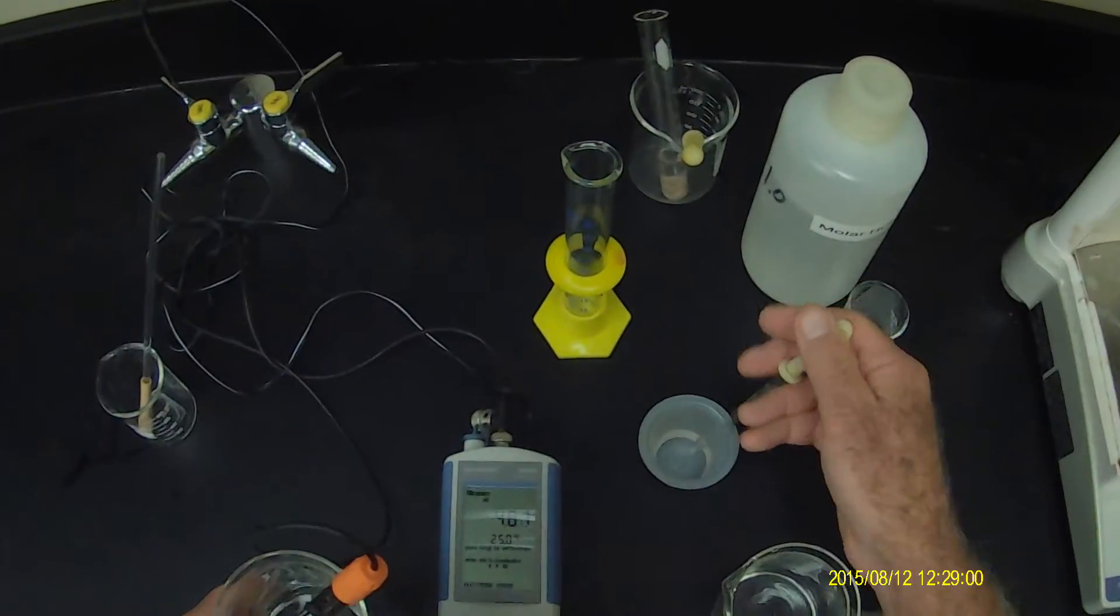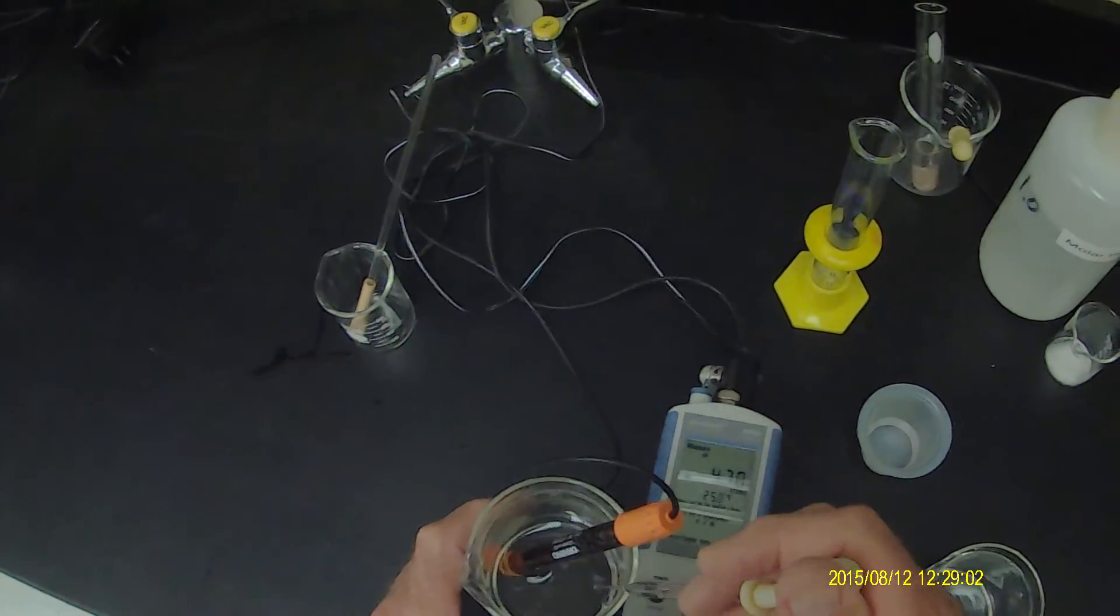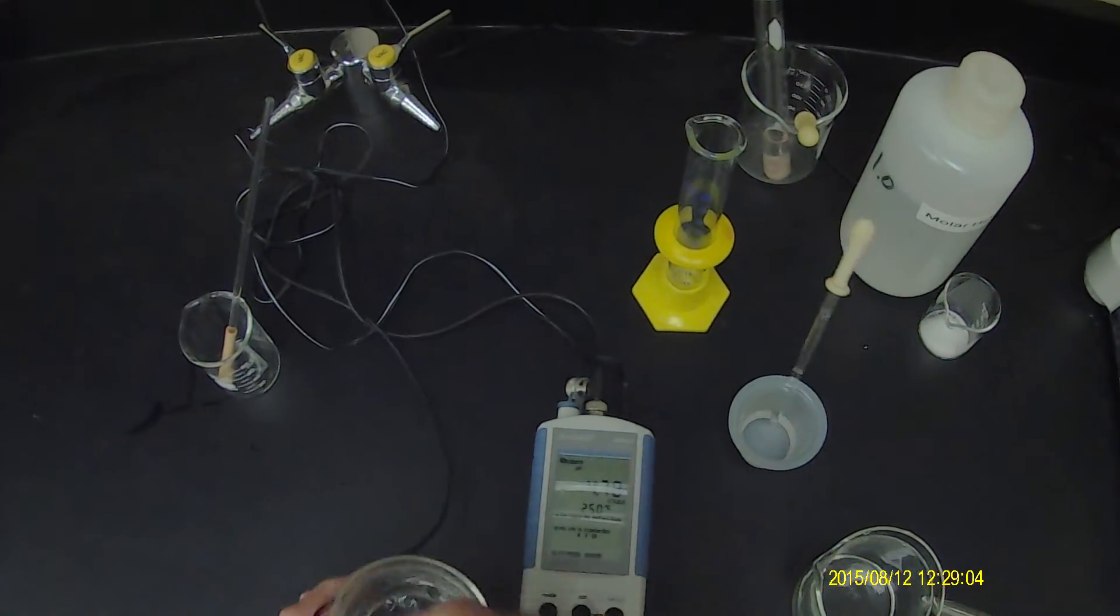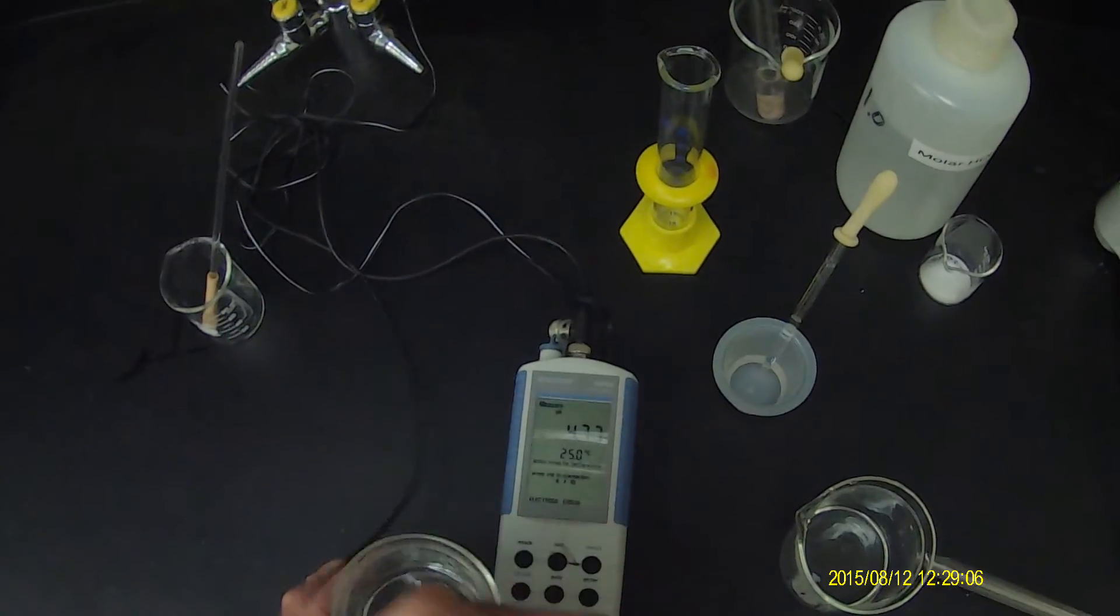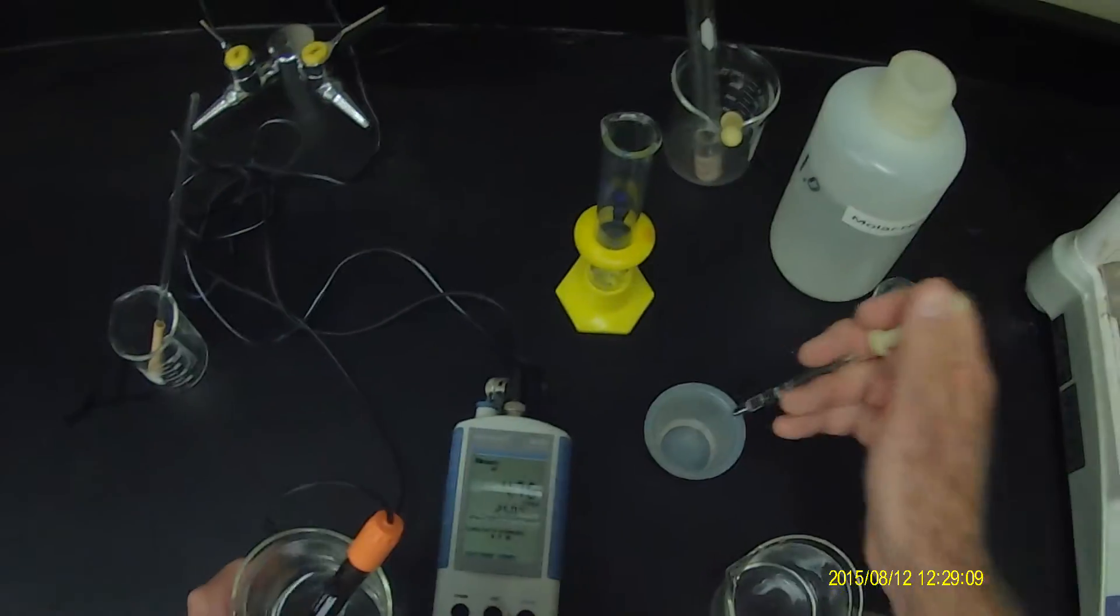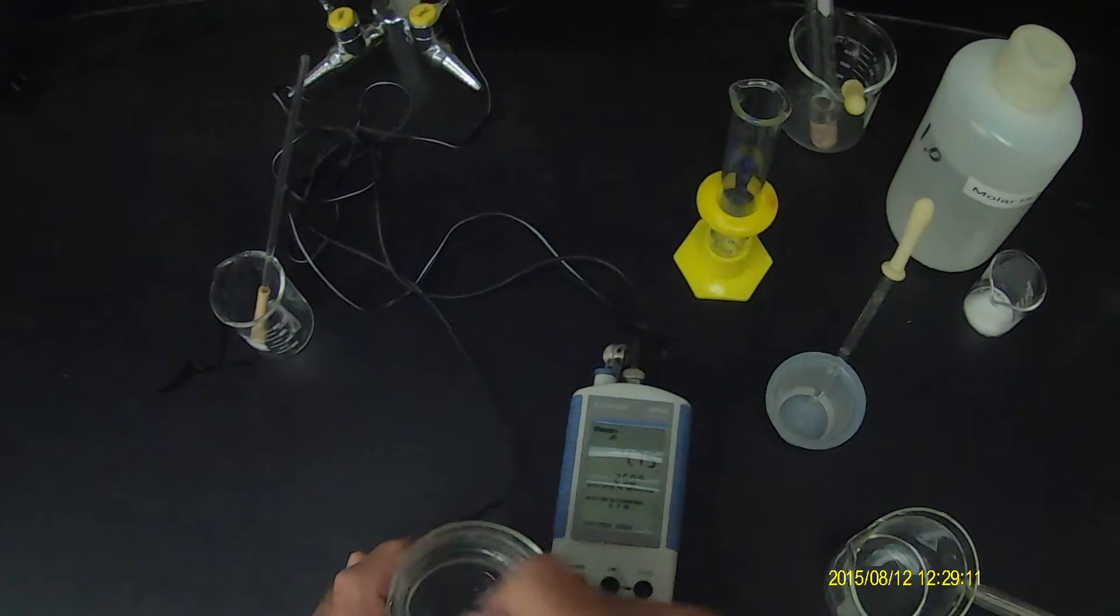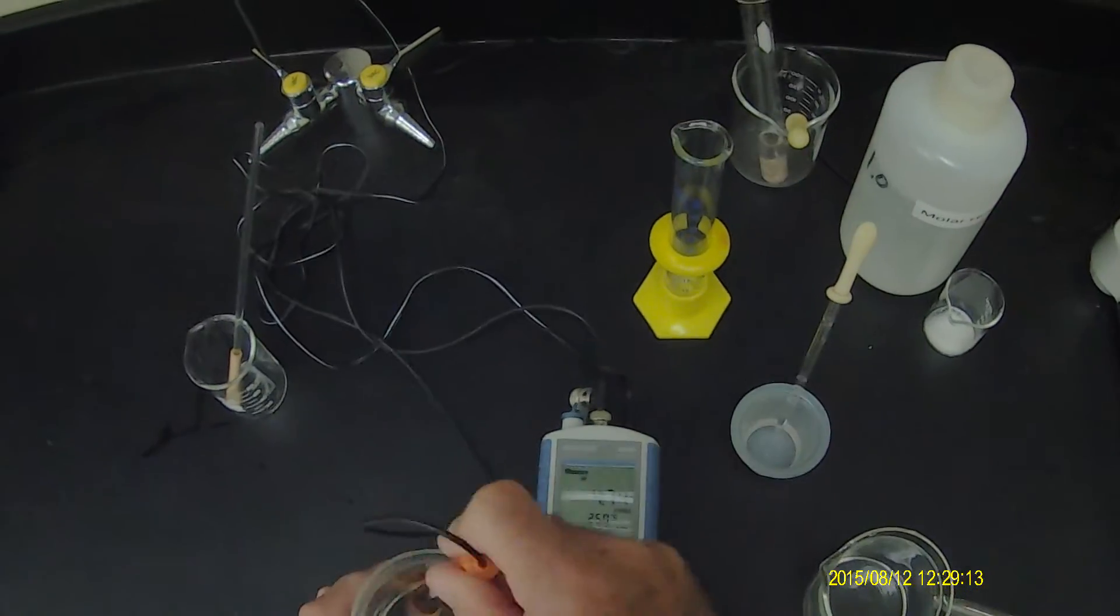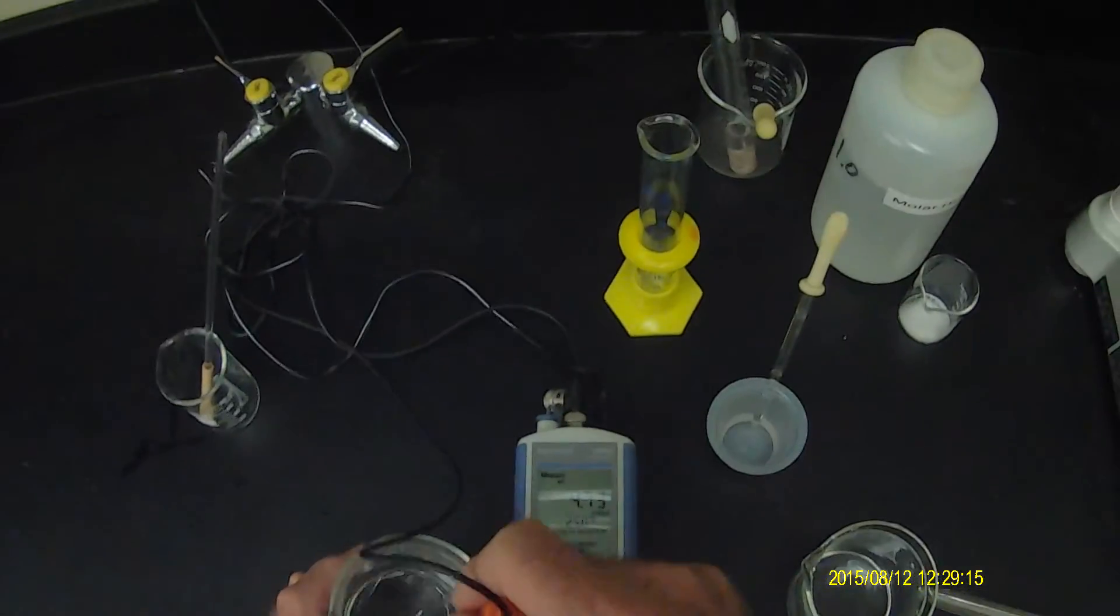Of course, it's getting more difficult to change the pH because we're nearing the pKa. There's 4.72. 4.77. A few more drops. 4.74. There we go. It looks like it's all dissolved as well.